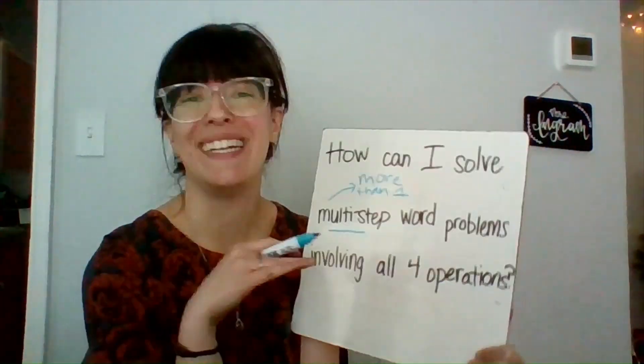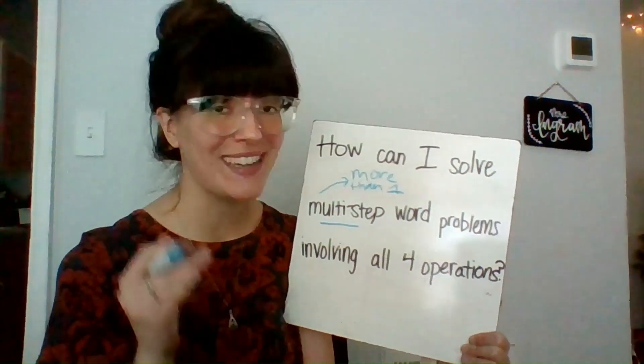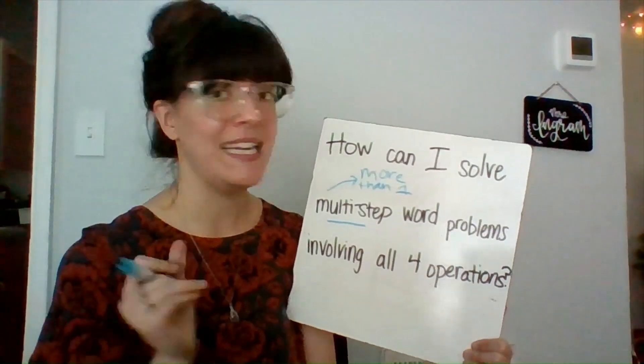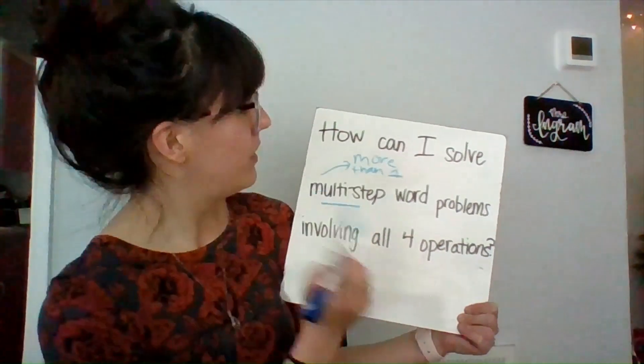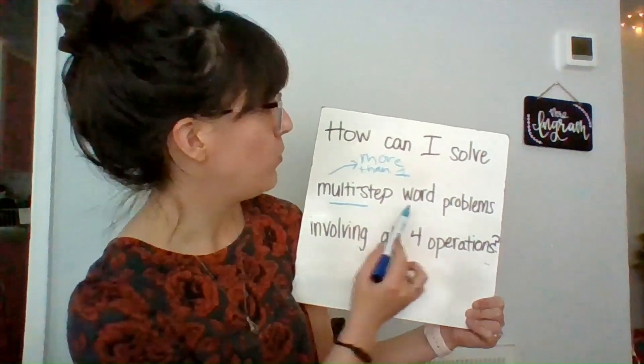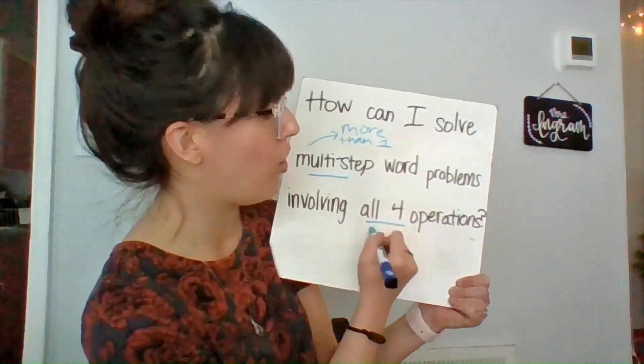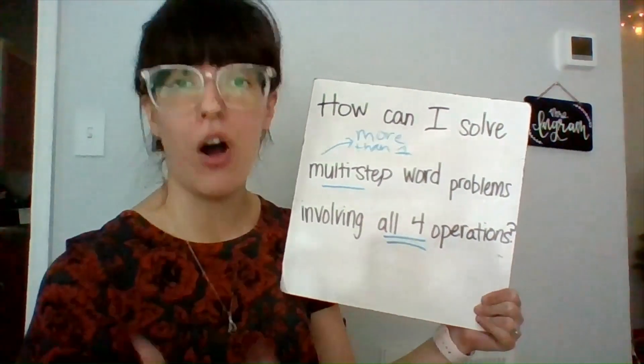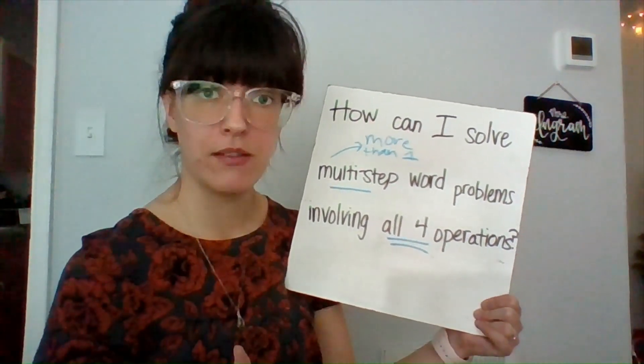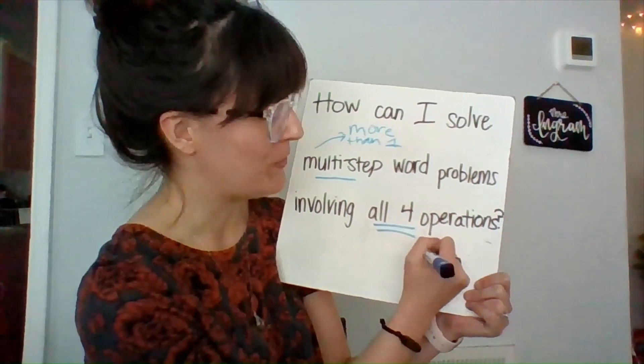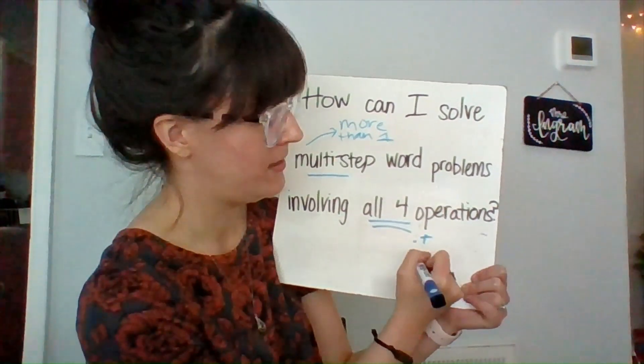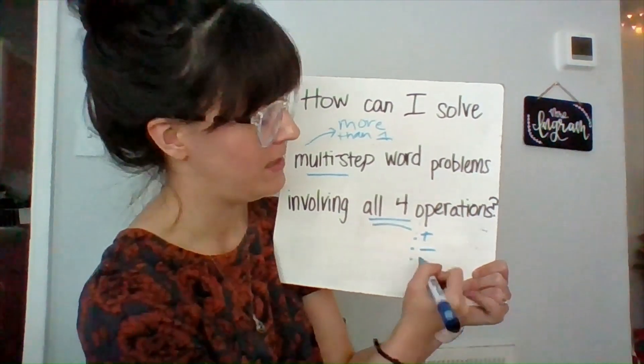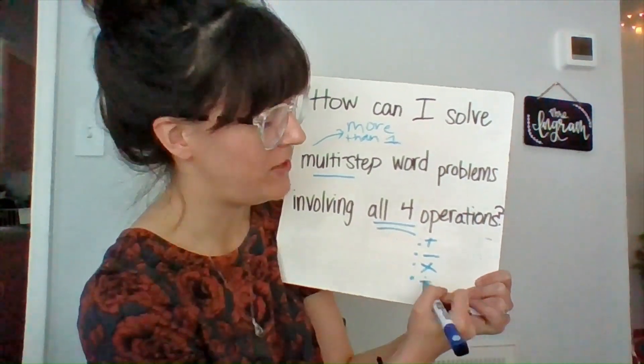If we're only doing one step, we're going to be getting it wrong because we've forgotten a hidden question inside the problem. All right, so how can I solve word problems with more than one step involving all four operations? Okay, so what are our four operations? We've got addition, subtraction, multiplication, and division.